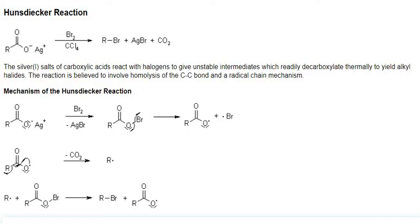Because here you see the cation and anion. It reacts with halogens to give an unstable intermediate which readily decarboxylates thermally to yield alkyl halides. The reaction is believed to involve homolysis of the carbon-carbon bond and a radical chain mechanism.